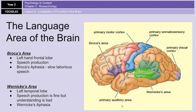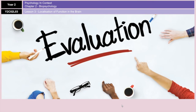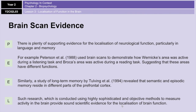Now, just very quickly, I'll move on to a couple of evaluation points. We are arguing that function is localized in the brain. First, there is plenty of supporting evidence for localization of function, particularly in language and memory. For example, studies by Peterson and Tulving have shown that neurological functions are in fact localized. You've got a PEEL paragraph there to use in your evaluations.